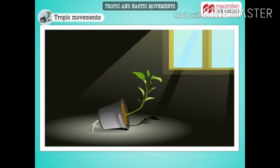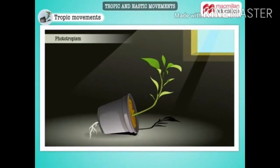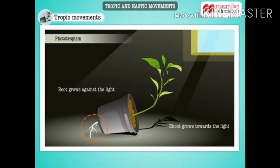Take a look at this plant kept indoors. We have chosen a pot that is open on both ends. All the stems have turned towards the window, that is towards light. Movement in plants due to light is called phototropism. Now let us take a closer look at a plant showing phototropic movement.